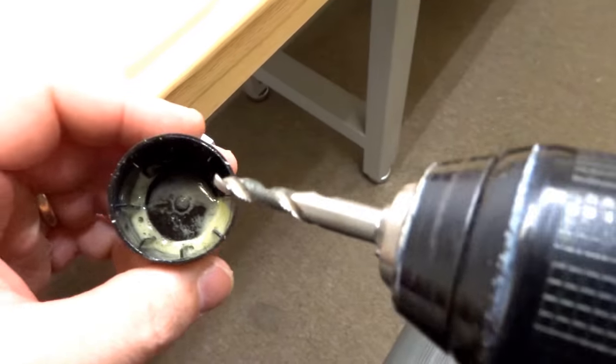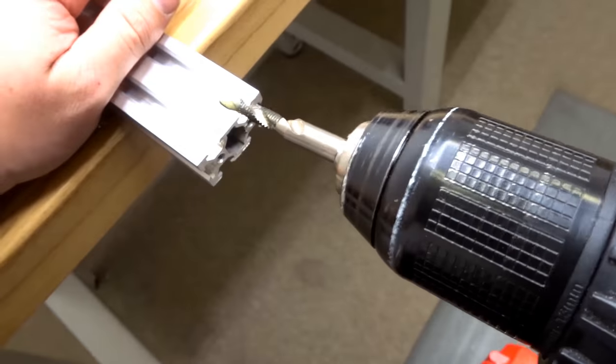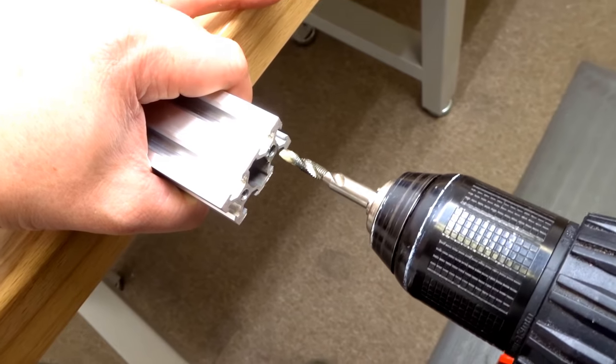You don't want to do that. You just want to wipe those shavings off, keep your tap lubricated, and just slowly go in and out until you have your V-slot tapped.